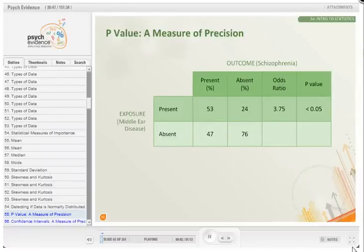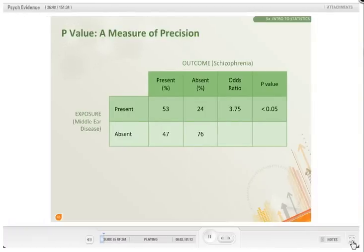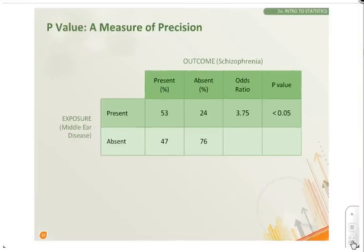We will now look at measures of precision. The first one is the p-value. The p-value is the likelihood or probability of the observed effect to have occurred by chance. In research, the arbitrary level at which p is set is less than 0.05.